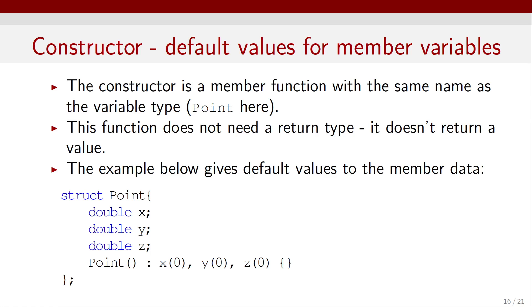Now, here's how to use a constructor to set default values for member variables. The constructor is a member function with the same name as the variable type. In this case, the variable type is Point, so the constructor name is Point. This function does not need a return type. It doesn't return a value. This example gives default values to the member data. And the default values are zero. So, if I declare a Point and don't specify the data, then by default the x, y, and z components will have values zero.